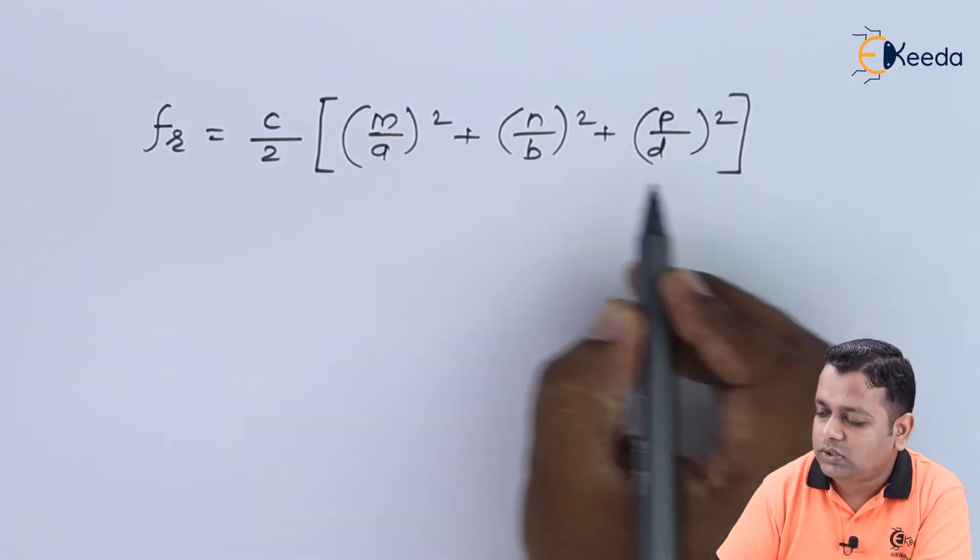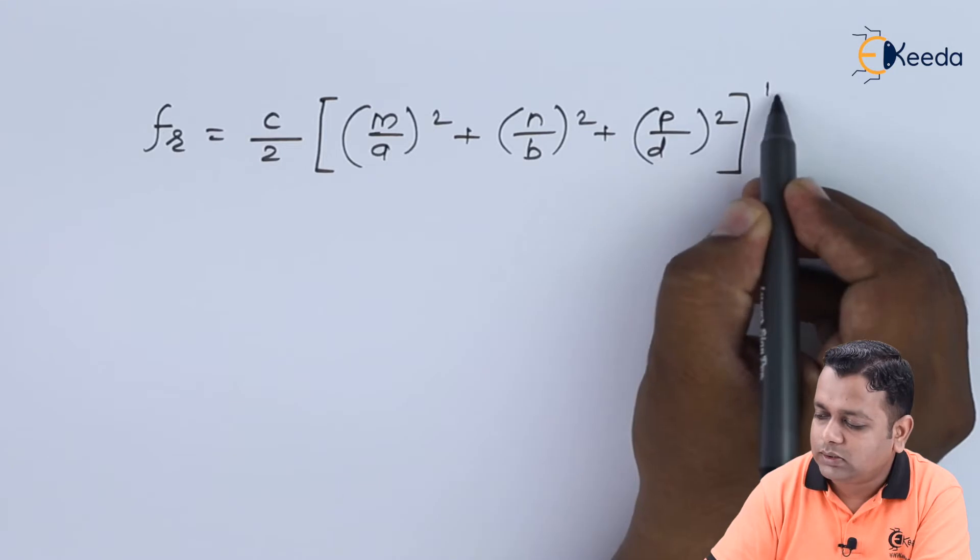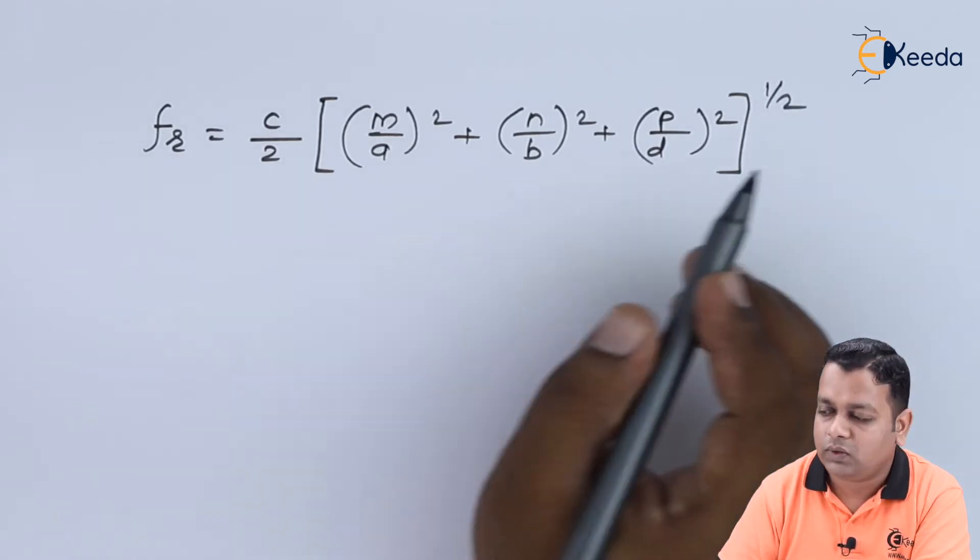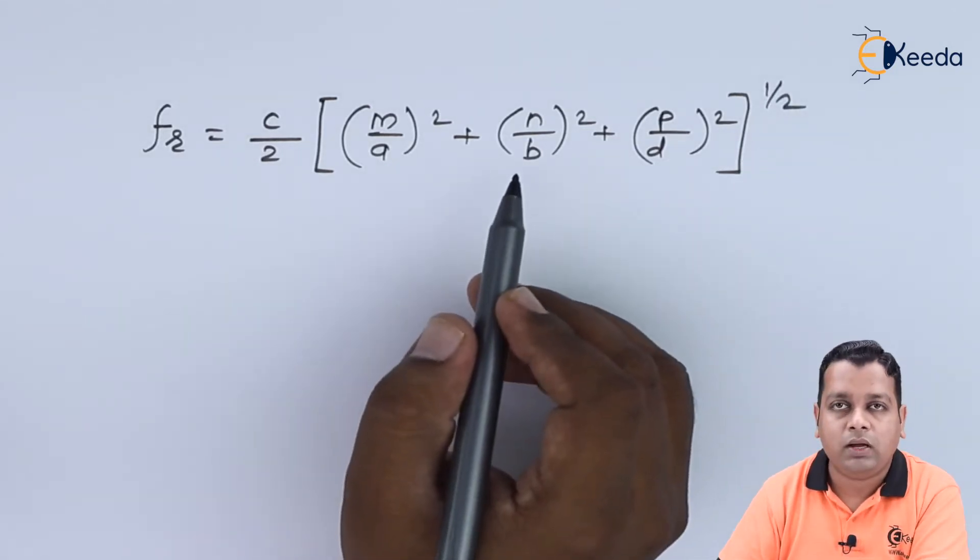This addition of squares is under square root, so it is having the power 1 by 2.